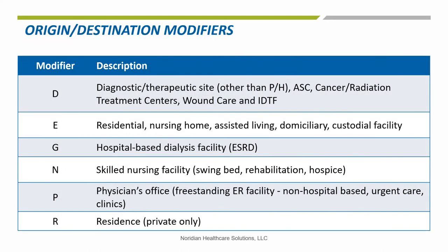The next three slides show the origin and destination modifier information. When these modifiers are incorrectly used, the entire claim is denied as a billing error for incorrect modifier usage. Currently, many ambulances are billing incorrectly with modifiers H or D. If these are ESRD, use G or J for dialysis facilities. D also includes radiation treatment, cancer, or therapy centers on the hospital campus — think of this as a free-standing outpatient site like an ambulatory surgical center or IDTF. Please note that R refers to private residences only and that N also includes swing bed or hospice. If you are unsure what modifier to use for either origin or destination, please refer to this presentation or visit our website for more details.